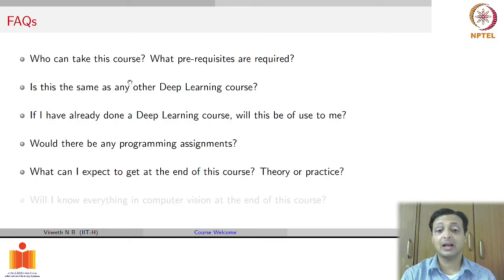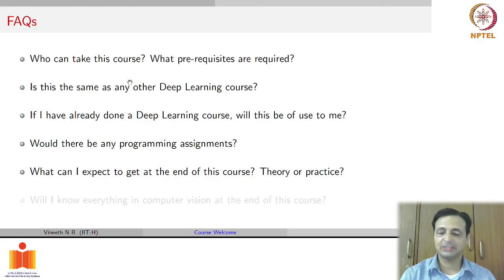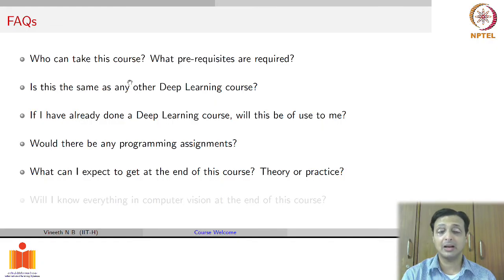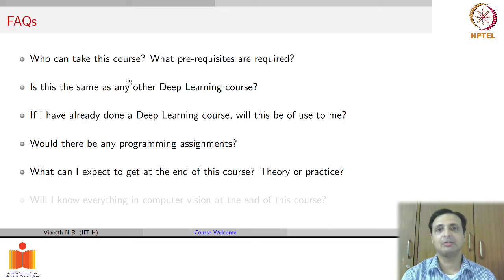What can you expect to get at the end of this course — theory or practice? The course is structured to go from theory to practice. The purpose is to be fundamental so you understand things from the basics, but we will also go to the point where you look through code for common practical applications of computer vision and get hands-on knowledge. It would be a mix of the two. The hope is that if you complete this course, you would be relevant in the industry — having skills applicable to deep learning for computer vision and related areas.